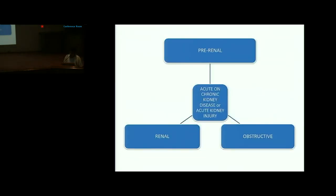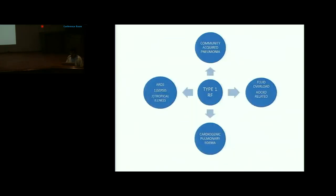For acute kidney injury versus acute-on-chronic kidney disease, rising azotemia was attributed likely to sepsis-related acute tubular necrosis, though hypoperfusion-related renal injury could not be ruled out. For Type 1 respiratory failure, the most likely diagnosis was community-acquired pneumonia based on symptomology and chest X-ray; however, ARDS (sepsis-related or tropical illness-related) and cardiogenic pulmonary edema were close differentials.